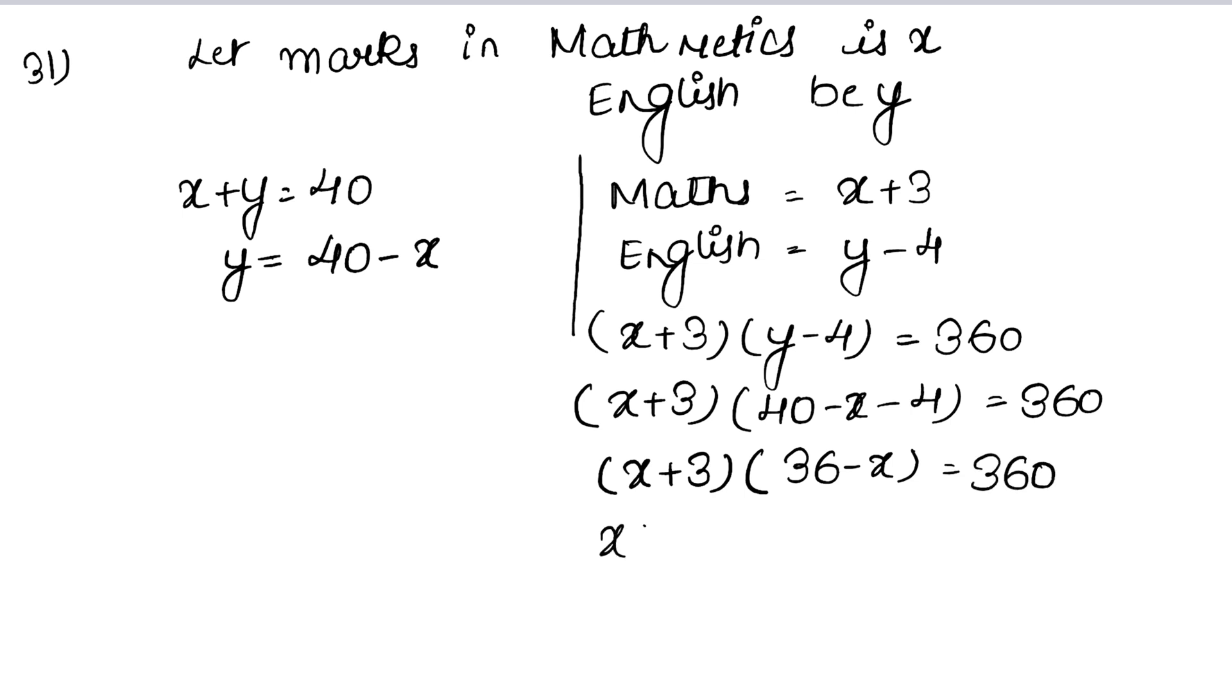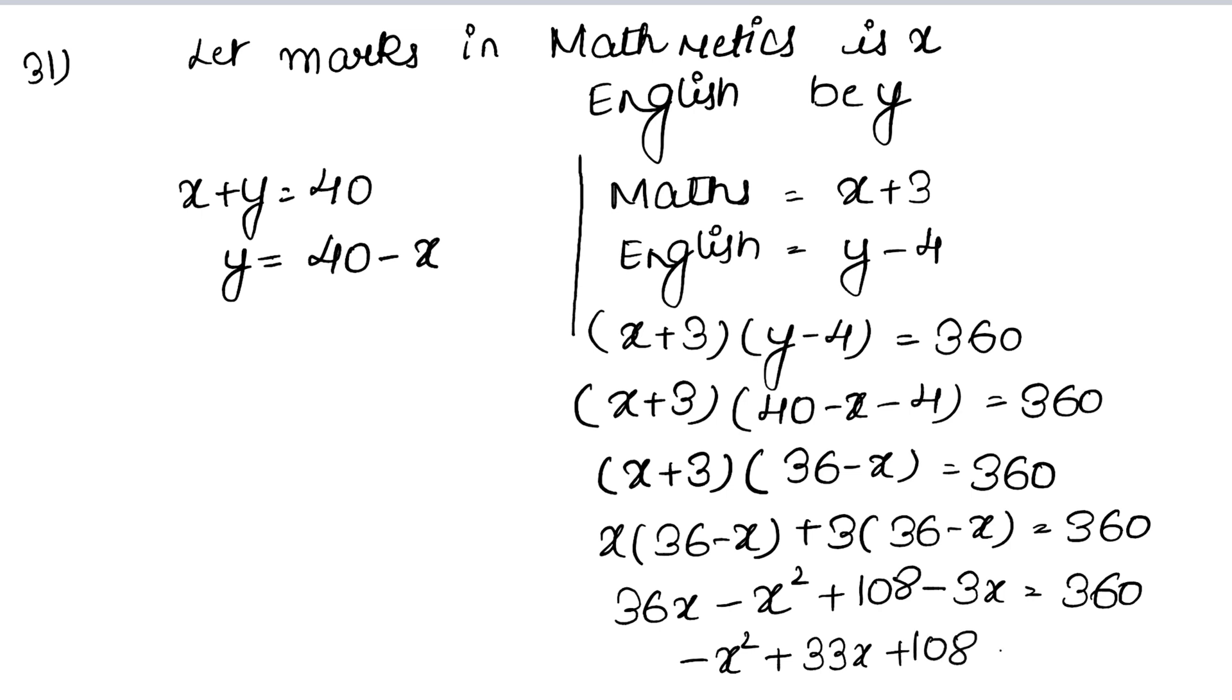Expanding the brackets: x squared plus 36x minus 3x equals x squared plus 33x plus 108 equals 360.